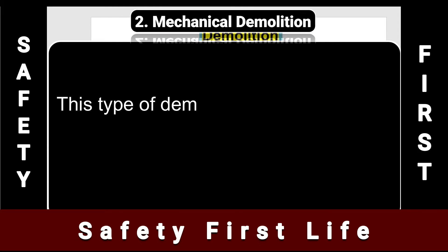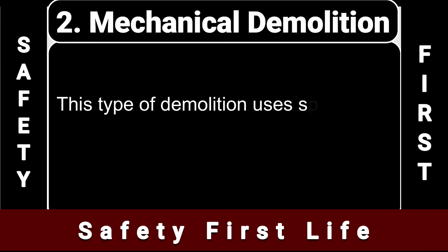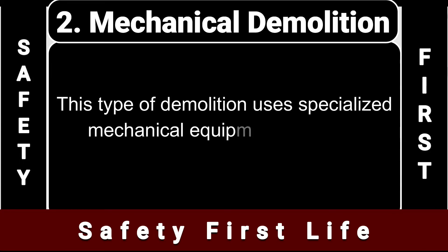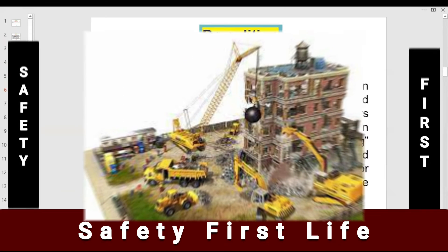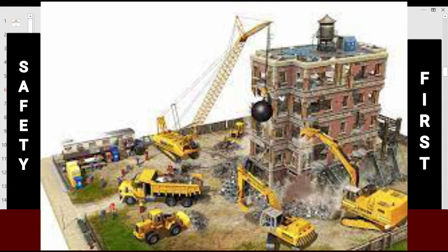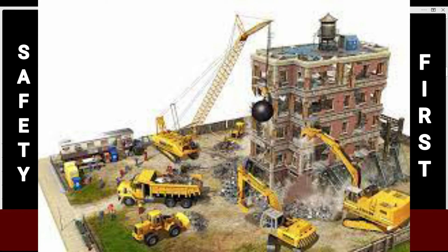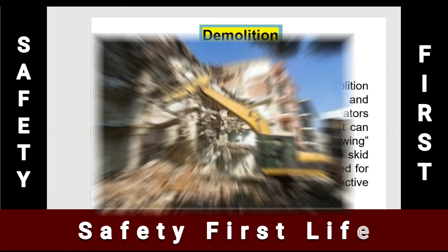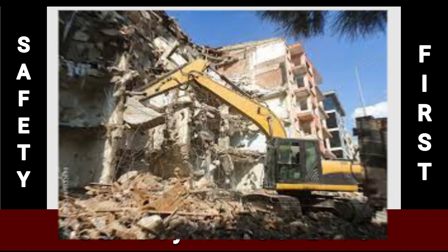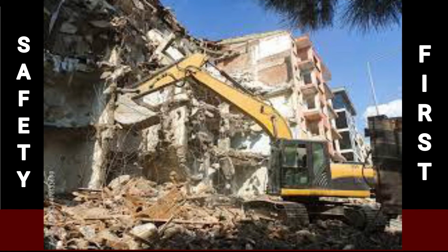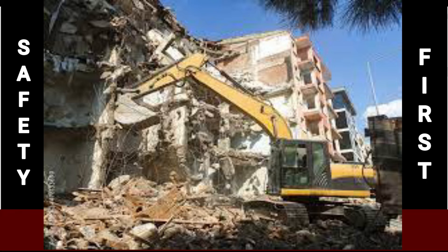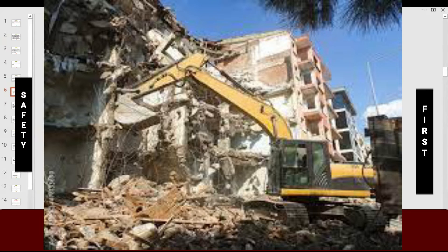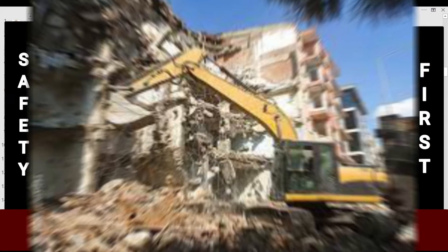Method number two is mechanical demolition. This type uses specialized mechanical equipment and tools, including hydraulic excavators equipped with specialized attachments that can break concrete and steel, effectively chewing the structure apart. Smaller equipment like skid steer loaders and demolition robots are used for smaller tasks and for interior and selective demolition.